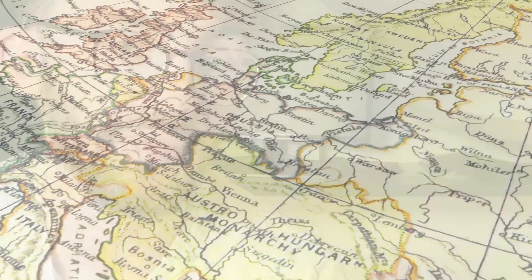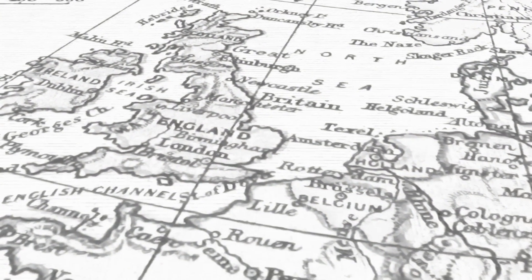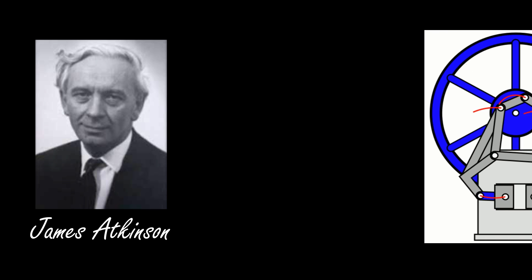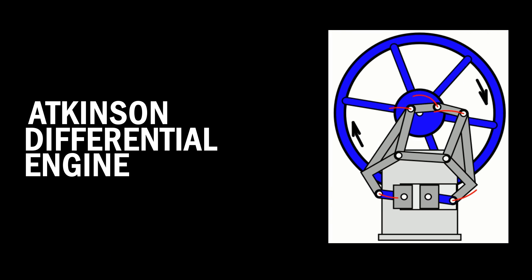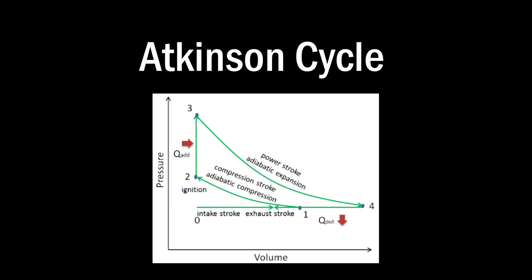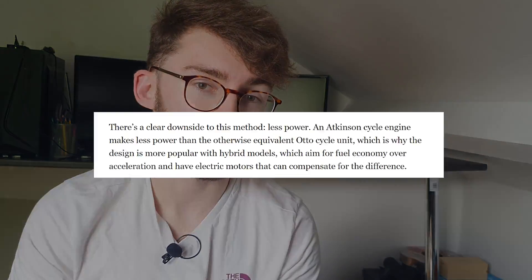The opposed piston engine is not a new idea. In fact, the first design dates all the way back to the late 19th century and was developed in Hampstead. A British gas engineer by the name of James Atkinson invented the first opposed piston engine, calling it the Atkinson differential engine. The engine used a slightly modified version of the Otto cycle, humbly named the Atkinson cycle — because why wouldn't you name it after yourself? In the end, the engine was a commercial failure, largely because the Atkinson cycle sacrifices power output for increased fuel efficiency, which 19th century industrialists weren't too bothered about.